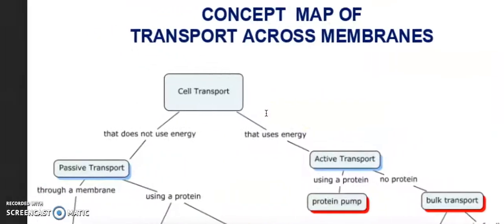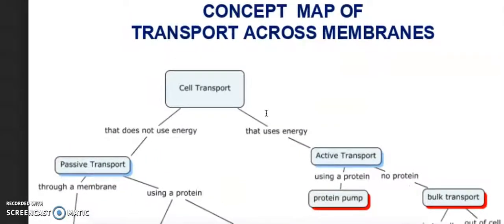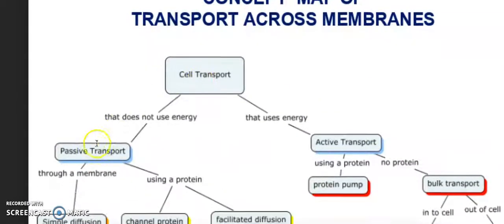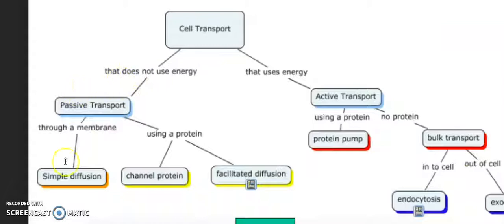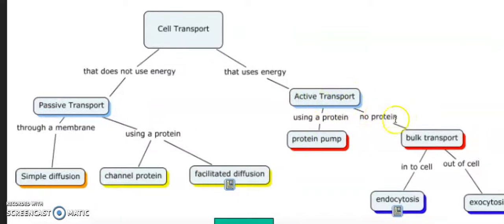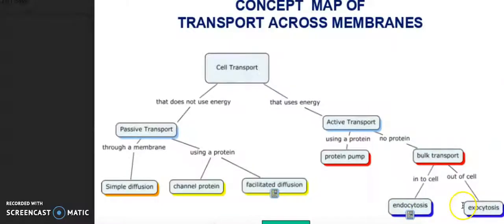Here's a concept map of transports between membranes. Cell transport that does not require energy is passive, and through a membrane is simple diffusion. Using a protein, you can either do facilitated diffusion or a channel protein. If you're going to use energy, it's active transport. If you use a protein, then that's a protein pump, and no protein would either be bulk transport. Into the cell would be endocytosis, and out of the cell would be exocytosis.